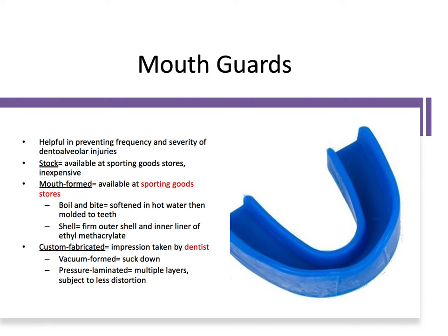What can we do to prevent dental trauma? Mouth guards are incredibly helpful in preventing the frequency and severity of dental alveolar injuries. I highly recommend them for kids who play contact sports, especially if they're unsupervised, or if they have an overjet greater than six millimeters. Stock mouth guards are available at sporting goods stores and online — relatively inexpensive, one size fits all — but they're not really the best option.